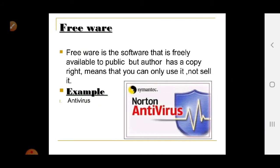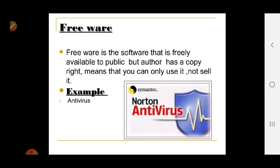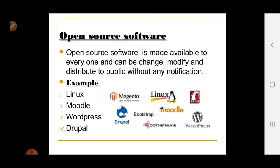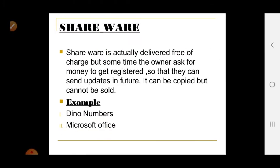Freeware is software that is freely available to the public, but the author holds a copyright — meaning you can only use it, not sell it. The key difference from open source is that you cannot make changes to freeware; you can only use it. Examples include antivirus software.